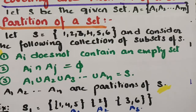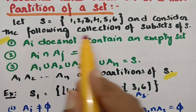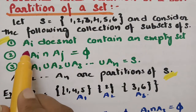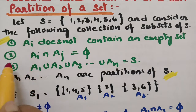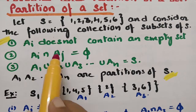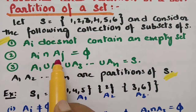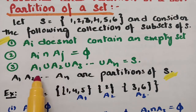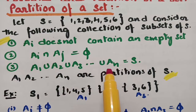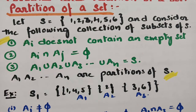For partition, the main set S equals {1, 2, 3, 4, 5, 6}. Consider the following collections of subsets. The three conditions are: no subset should be empty; there should be disjoint sets, meaning the intersection of any Ai and Aj should be empty; and the union of all subsets should equal the main set S. If all three conditions hold, we say the given subsets are the partition of S.